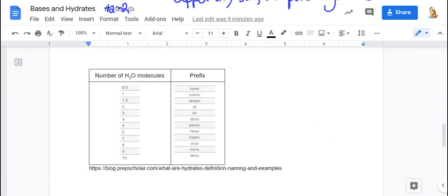Now the prefixes are normal. One is mono, two is di, three is tri, but you can have a half a water molecule bonded. So that prefix is called hemi, and you can have one and a half molecules of water attached. So that's sesqui. So those are the only two new prefixes for you.